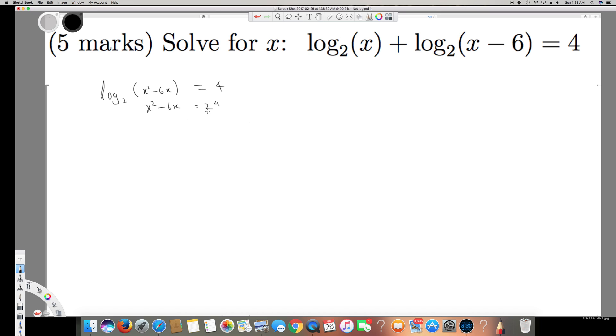So it's going to be x² - 6x minus 2 to the power of 4, which is 16. So I put 16 right here equal to 0. Now what I have to do is I can factor this one.